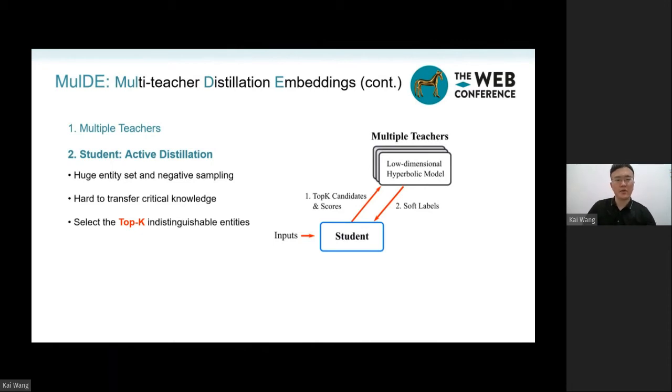Given an ER query, students don't receive teacher score sequences above the negative samples. Rather, the student actively selects the top key entities with the highest scores and asks teachers to rescore these entities and return soft labels.